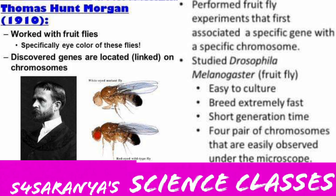We learned about the Chromosomal Theory of Inheritance in the previous session. Thomas Hunt Morgan worked with fruit flies to prove the Chromosomal Theory of Inheritance. He also carried out many dihybrid cross experiments to prove sex-linked inheritance about linked genes. He selected Drosophila melanogaster as a suitable material for genetic study because it has many beneficial features.